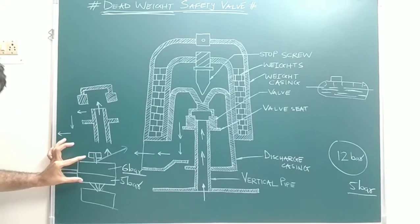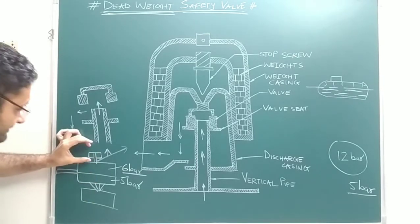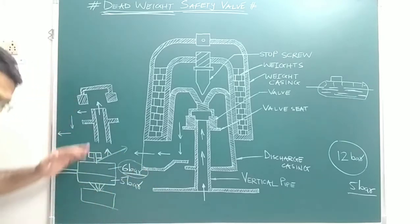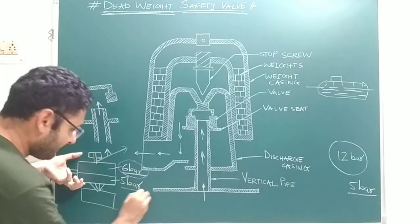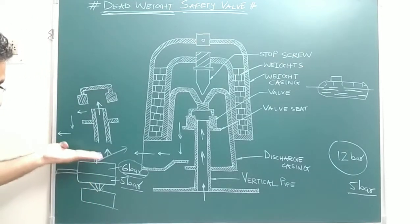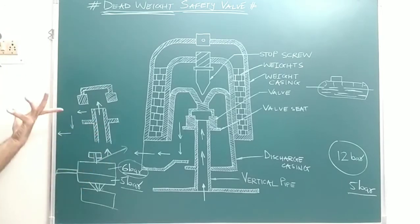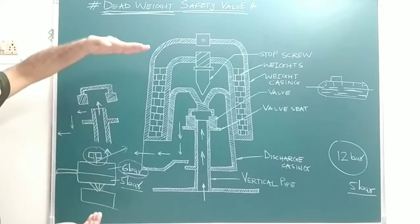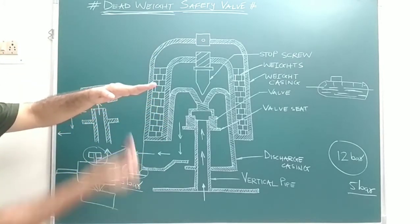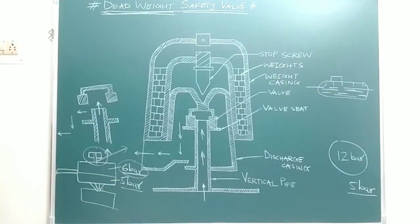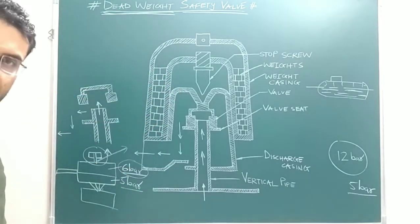With the help of this dead weight, safety is provided to the pressure cooker. Suppose that whistle — the dead weight — is not present. When pressure more than the working pressure is produced inside the cooker (working pressure is 5 bar), there may be a chance the pressure cooker may blast. But that does not happen because the dead weight in the form of a whistle is used. The whistle blows, excess pressure is released, and the whistle balances the working pressure of the steam.